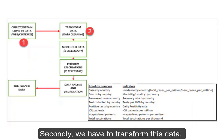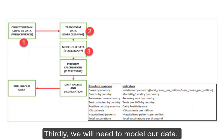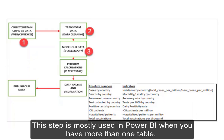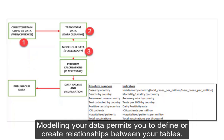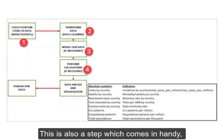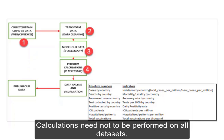Secondly, we have to transform this data. It is very unusual in real life to have your data in a form which is ready for analysis. Thirdly, we will need to model our data. This step is mostly used in Power BI when you have more than one table. Modeling your data permits you to define or create relationships between your tables. Fourthly, we will look at how to perform calculations on our data set. This is a step which comes in handy depending on your data set and what you want to achieve. Calculations need not be performed on all data sets.